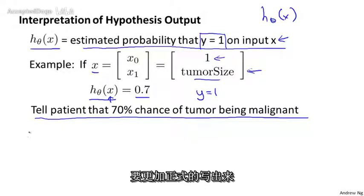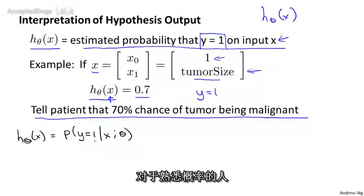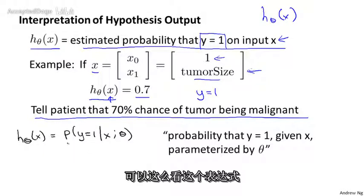To write this out slightly more formally or to write this out in math, I'm going to interpret my hypothesis output as p of y equals 1 given x parameterized by theta. So for those of you that are familiar with probability, this equation may make sense. If you're a little less familiar with probability, here's how I read this expression.